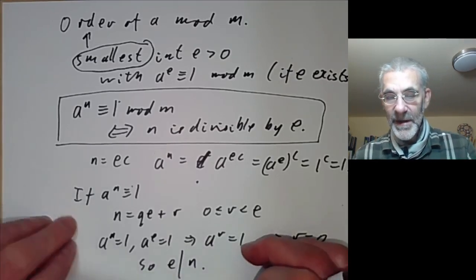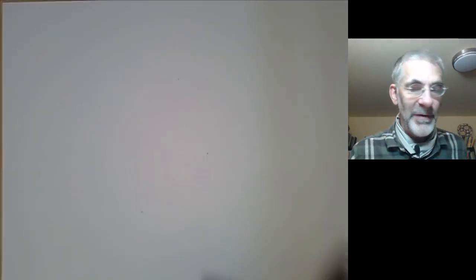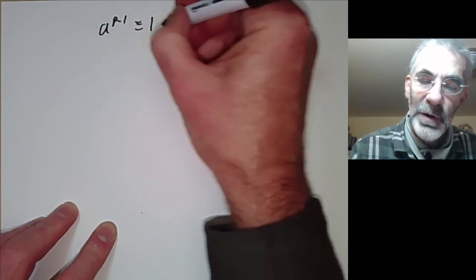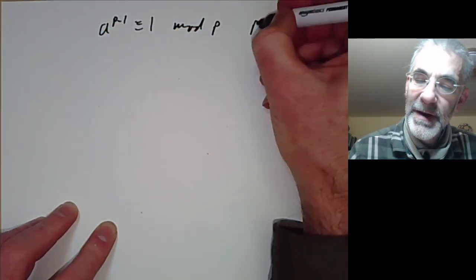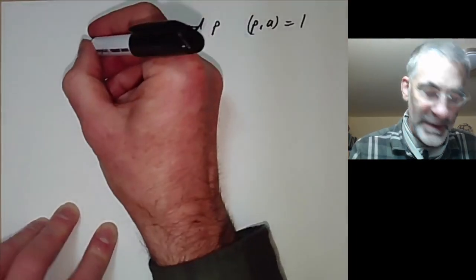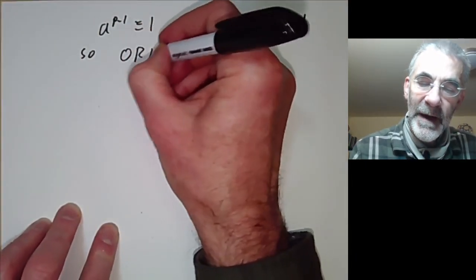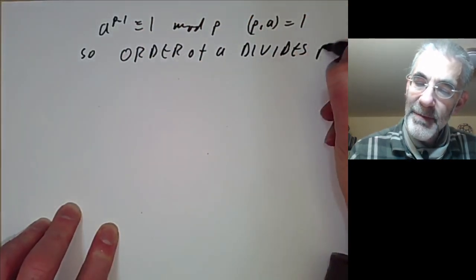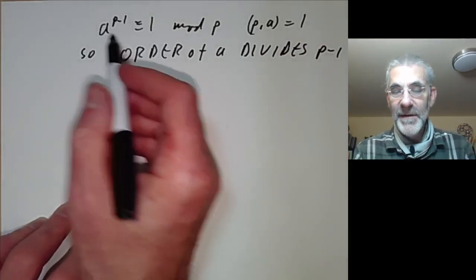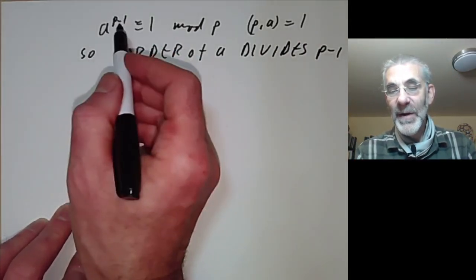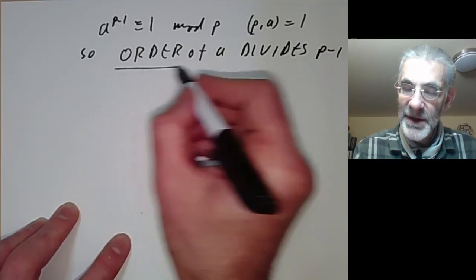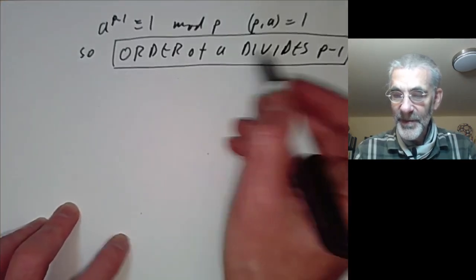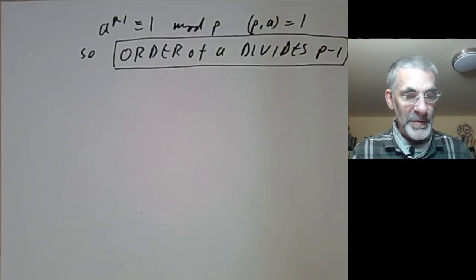In particular, a useful corollary from Fermat's theorem: since a to the p-minus-1 is congruent to 1 mod p (when gcd(a,p)=1), the order of a divides p-minus-1. This is a very useful fact about integers co-prime to p, and we're now going to use it.